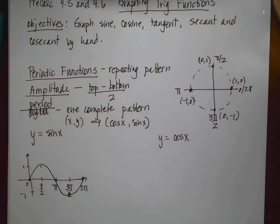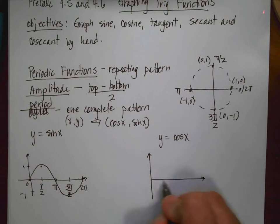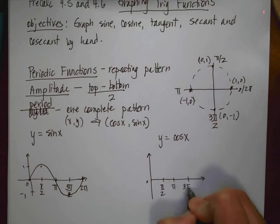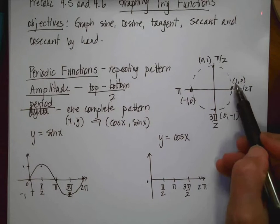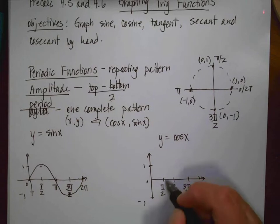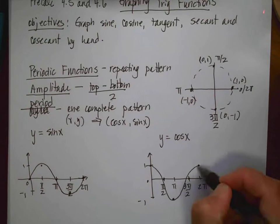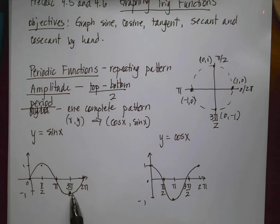This is one complete cycle for the sine function. Now graphing cosine — again from the unit circle — at 0, cosine is 1; at π/2, cosine is 0; at π, it's -1; at 3π/2, it's 0; and at 2π, it's 1. So the cosine function starts high and finishes high, while the sine function starts low and finishes low.